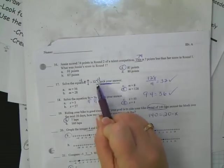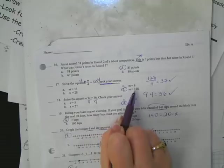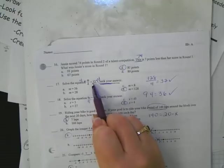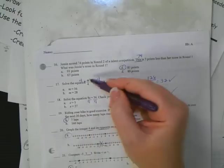Alright, number 20, graph the integer 4 and its opposite. So that's represented in A, 4 and its opposite of negative 4.